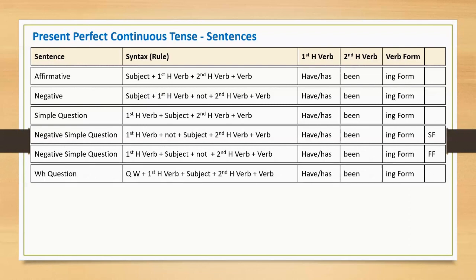A present perfect continuous WH question is an interrogative statement that starts with a question word or phrase, followed by the first helping verb, subject, second helping verb, and main verb.